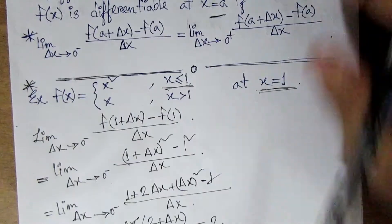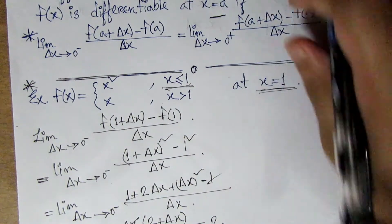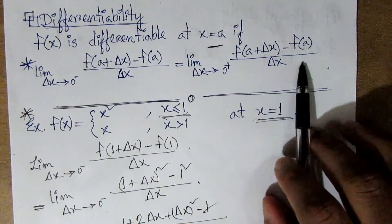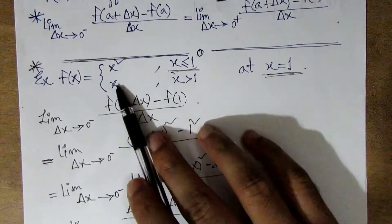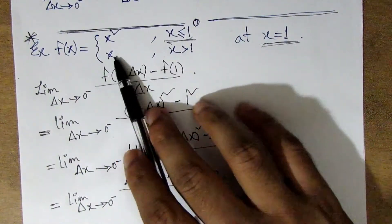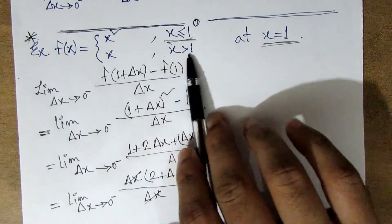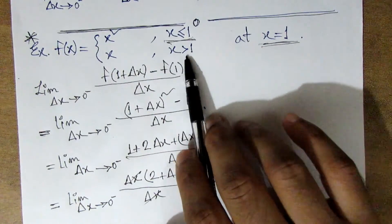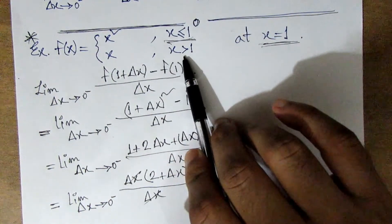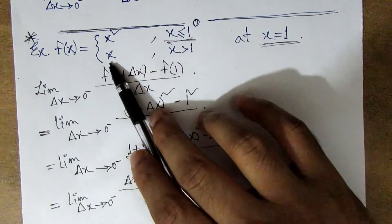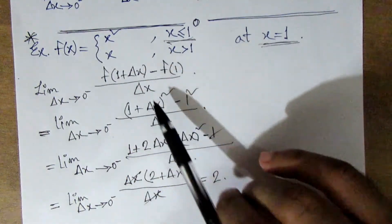Right-hand side: the formula is the same. We have to add the function and equation on the interval 1 plus Δx and expand the square using the same approach.